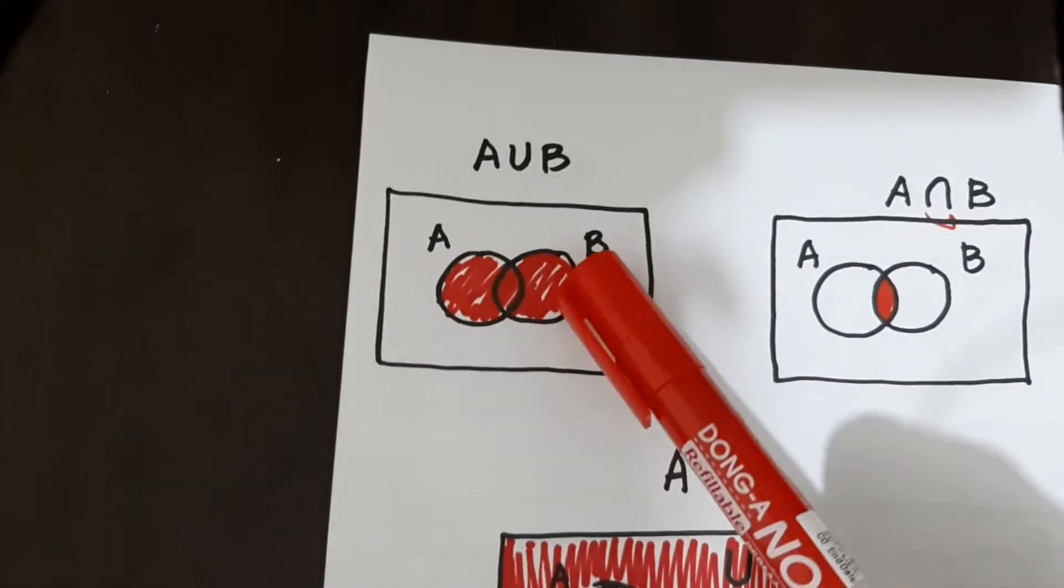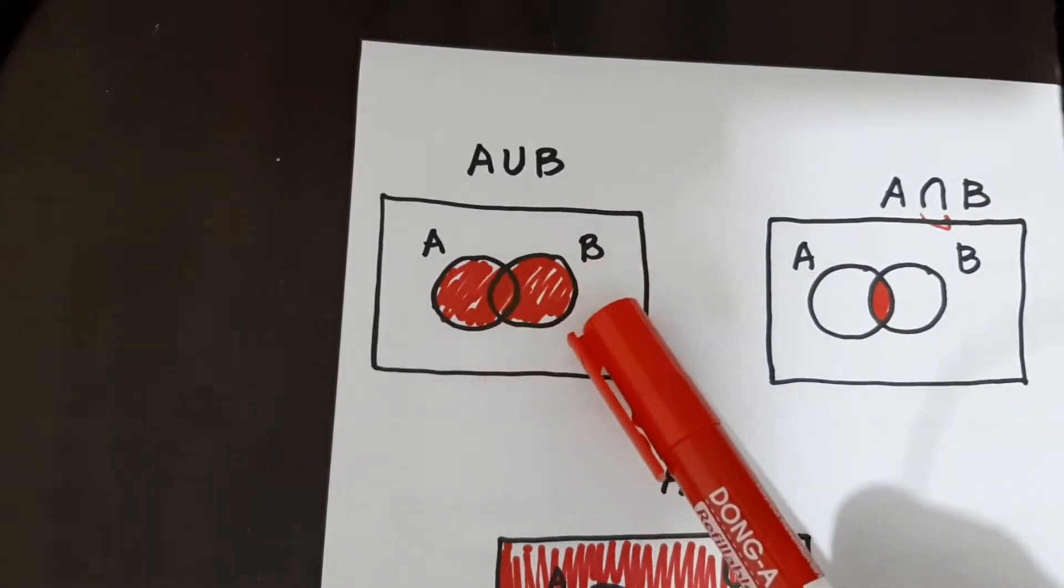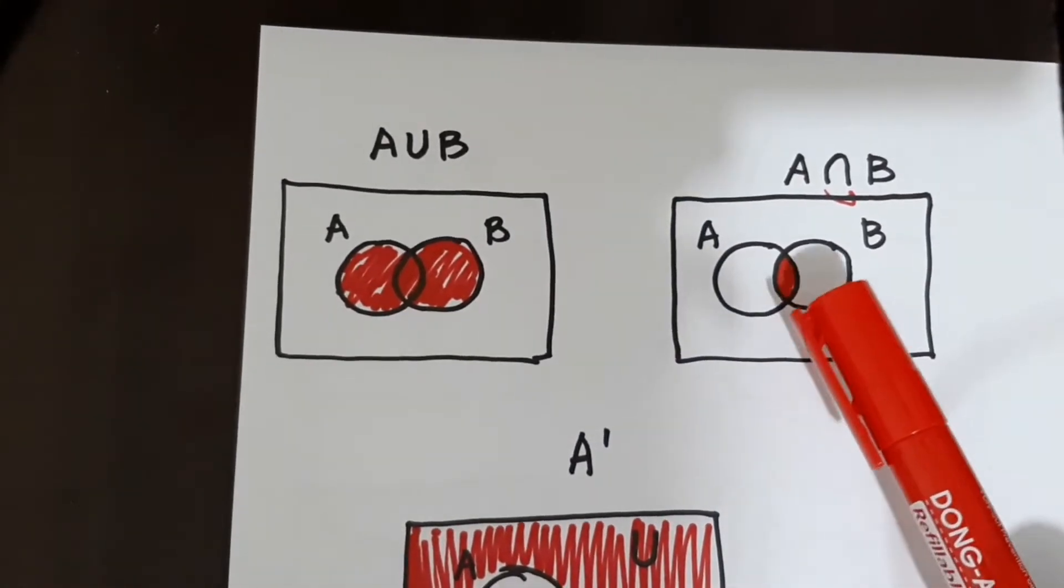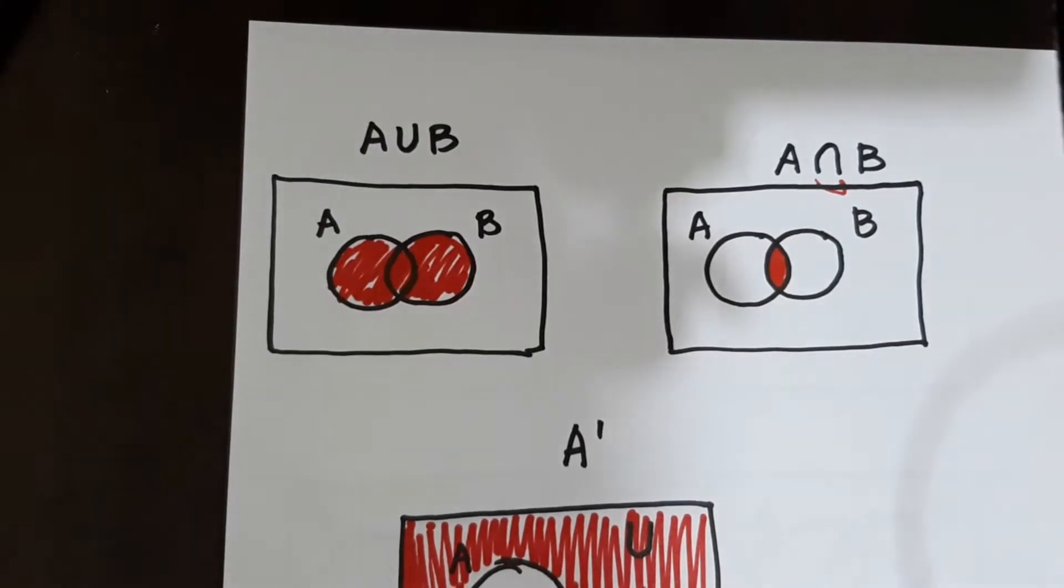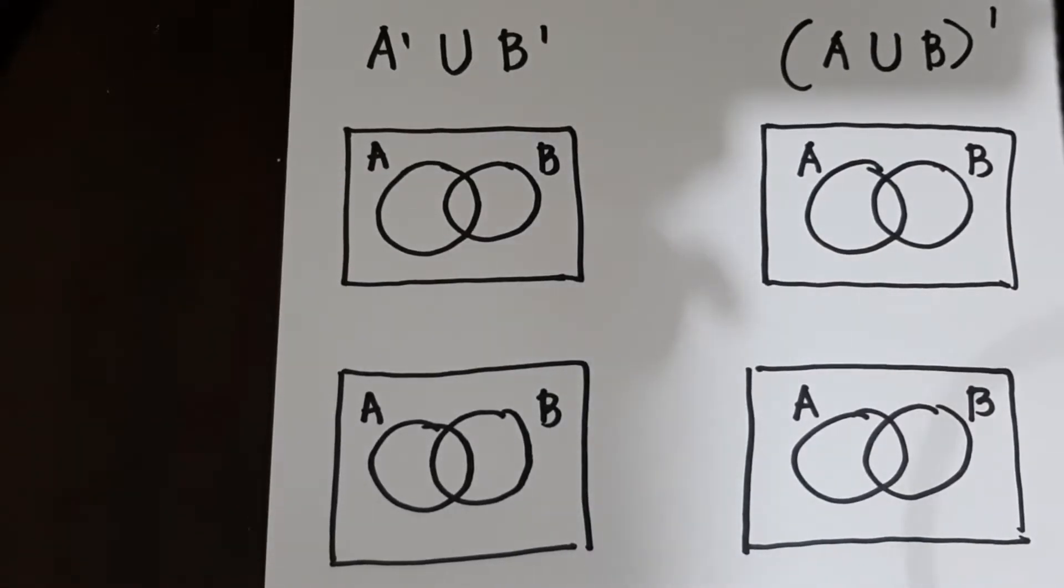Dito naman another term is A or set A or set B for the union. And then for the intersection, set A and set B. So yun yung mga keywords. So let's try to solve these problems.